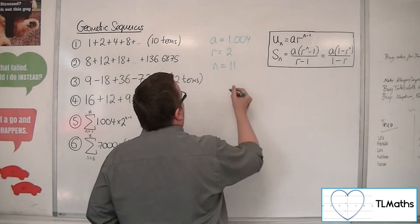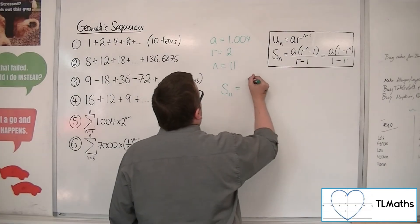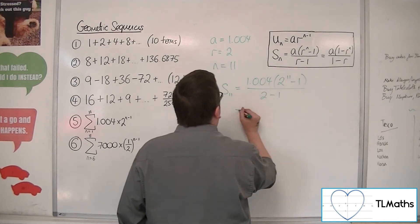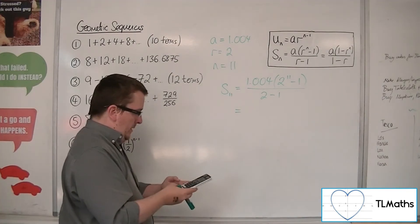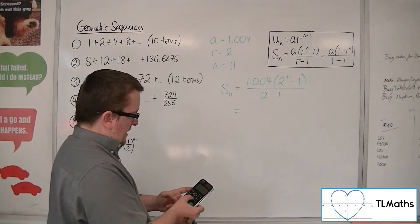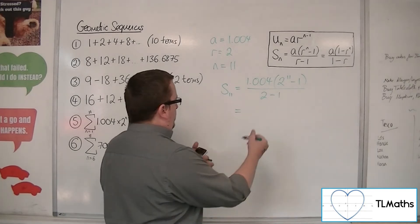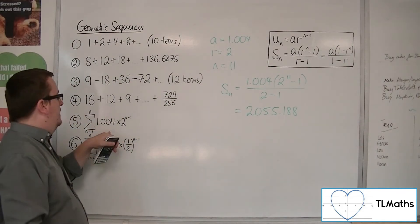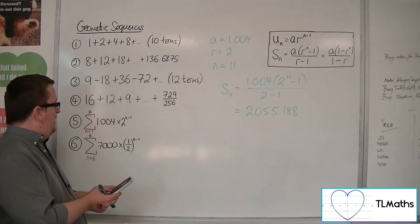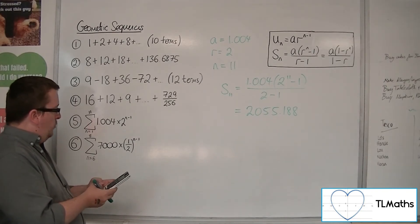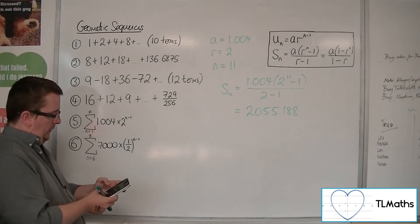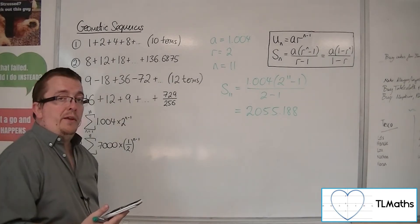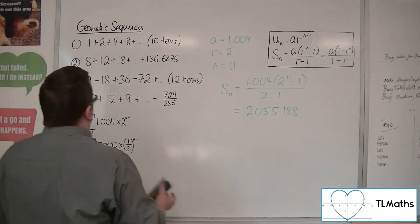So I'm going to use this back to this first formula now. So S11 is 1.004 times 2 to the 11 minus 1 over 2 minus 1. So the denominator is clearly 1. The numerator is 2 to the 11, take away 1, 2055.188. And that should be that sum there. Now, it's always best to check, so using your sigma button, type in the 1.004 times by 2 to the power of x minus 1. And then from x is 1 to 11, which gets us precisely the same answer as required. So that's number 5.